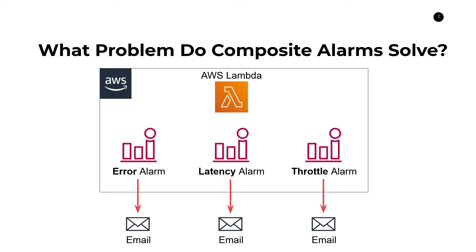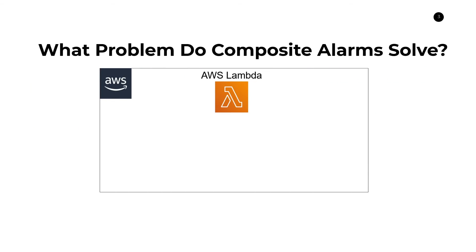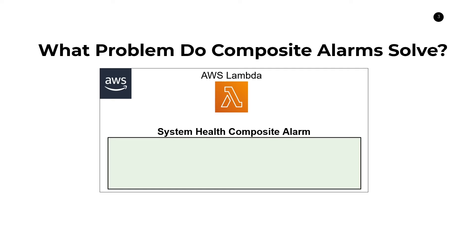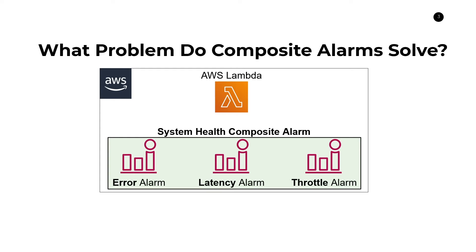Composite alarms act as a kind of wrapper for all of these separate alarms. Instead of creating three separate alarms that each trigger their own notifications, you create what I've named a 'system health composite alarm.' This is a top-level alarm — still an alarm in the view of Amazon CloudWatch — except it is the parent node, and the individual error, latency, and throttling alarms are child nodes underneath it.